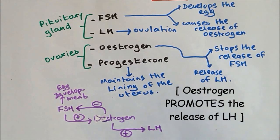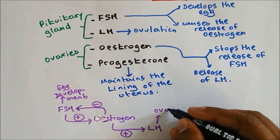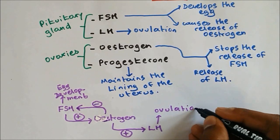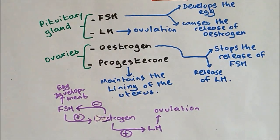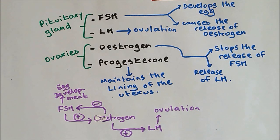LH causes ovulation, where the egg is released at day 14. And if the egg is not fertilized, then the whole menstrual cycle starts again.